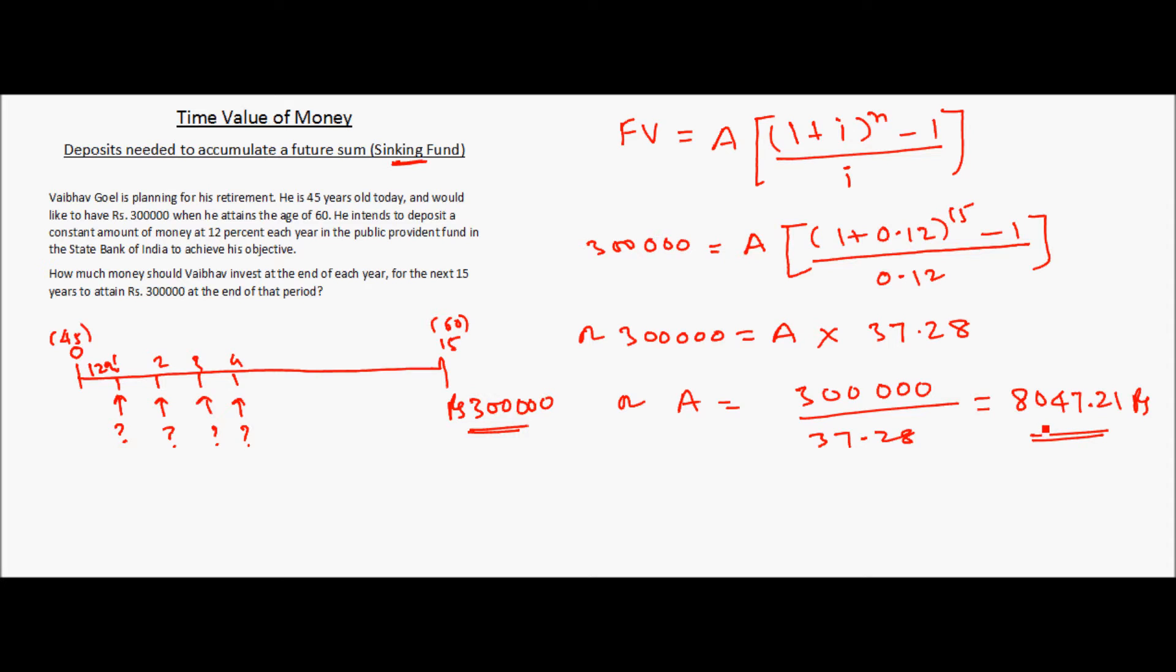So this is the amount of annual payment which Vabhav should be depositing at 12% per annum in order to get rupees 300,000 at the end of the next 15 years.